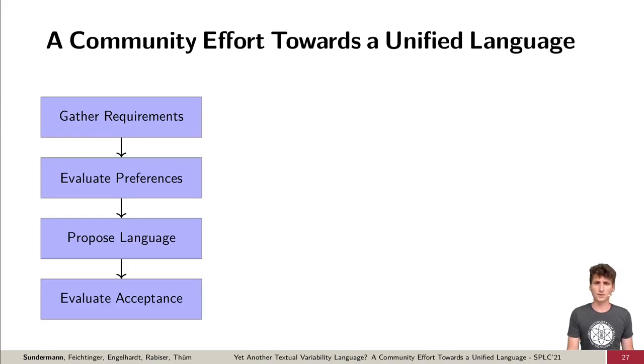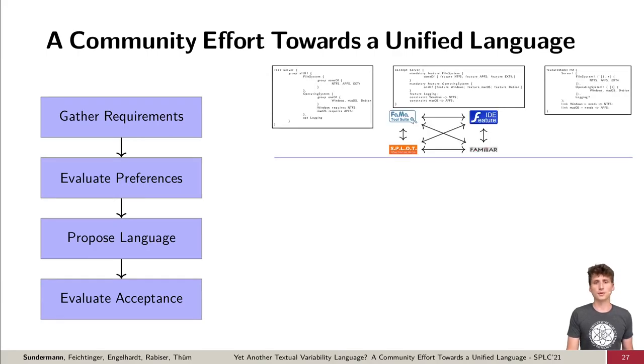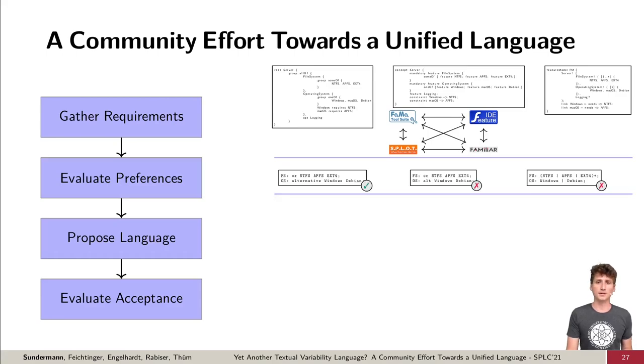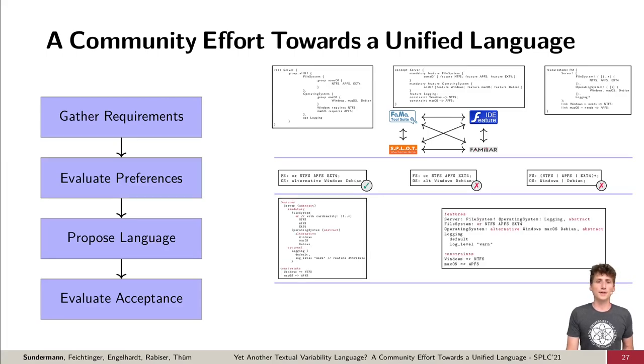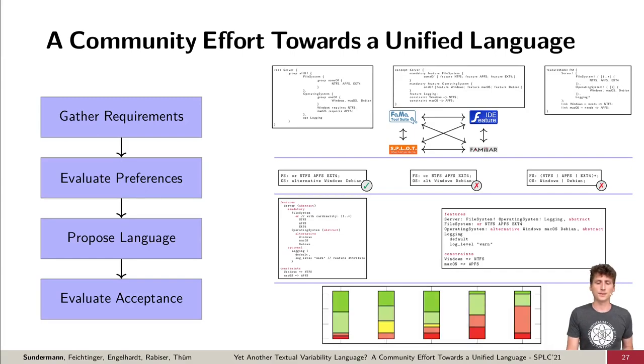In this video, we showed the design process of UVL, which was a joint effort of the community. We first gathered requirements to present them to the community and evaluated their preferences, made a language proposal and evaluated their acceptance. The results give a first indicator that UVL may be a promising candidate for a unified language in the future. Nevertheless, we need further evaluations in the future and also need to apply UVL in practice to mature its design and ultimately reach the goal of a community standard.